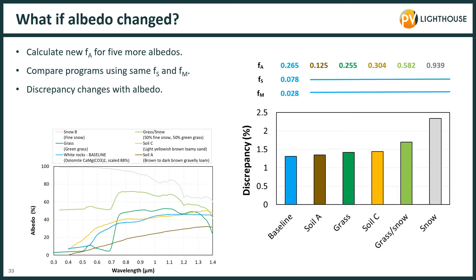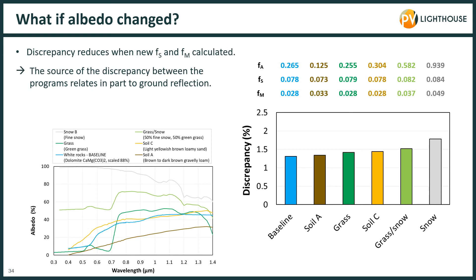We then followed a similar procedure to evaluate what happens when the albedo changes. We found the greatest discrepancy between programs at very high albedo, but that discrepancy could be decreased significantly by setting the three parameters using our determined method. The mismatch factor is almost twice as high under snow as under the baseline albedo, and there is also a greater shading fraction — so even with the same torque tube size, high albedo effectively produces greater shading of the modules.